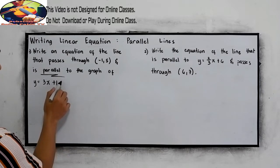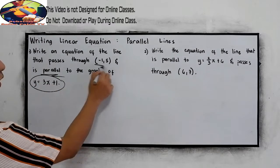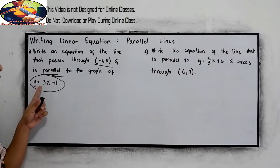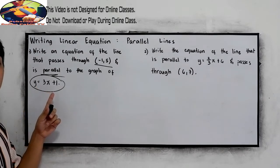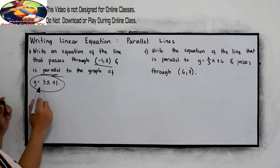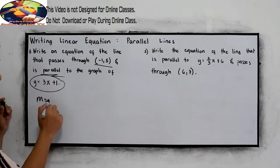So we have an equation and a point. In our equation, we can get our slope. This is written in slope-intercept form, y is equal to mx plus b. So our m here is positive 3.